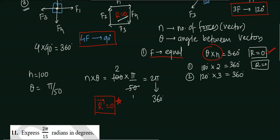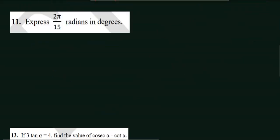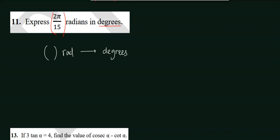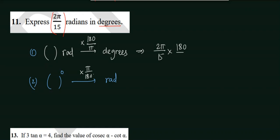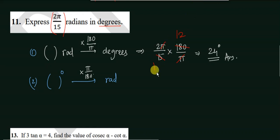The second question asks to express a given angle in degrees. To convert radians to degrees, multiply by 180/π. Here the angle is 2π/15. So: (2π/15) × (180/π) — the π cancels — giving 2 × 180/15 = 360/15 = 24 degrees. Include these conversion concepts in your short notes as they are important for exams.